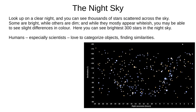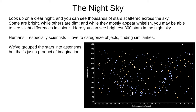On a clear night you can see thousands of stars in the sky. Some are bright while others are dim and they vary a little in colour. They mostly appear whitish but you may be able to see slight differences. This picture shows the brightest 300 stars in the night sky. Humans and especially scientists love to categorise objects into groups with similar properties — so how are we going to do that with stars? We've grouped stars into shapes called asterisms, but that's just a product of our imagination and doesn't tell us much about the science.